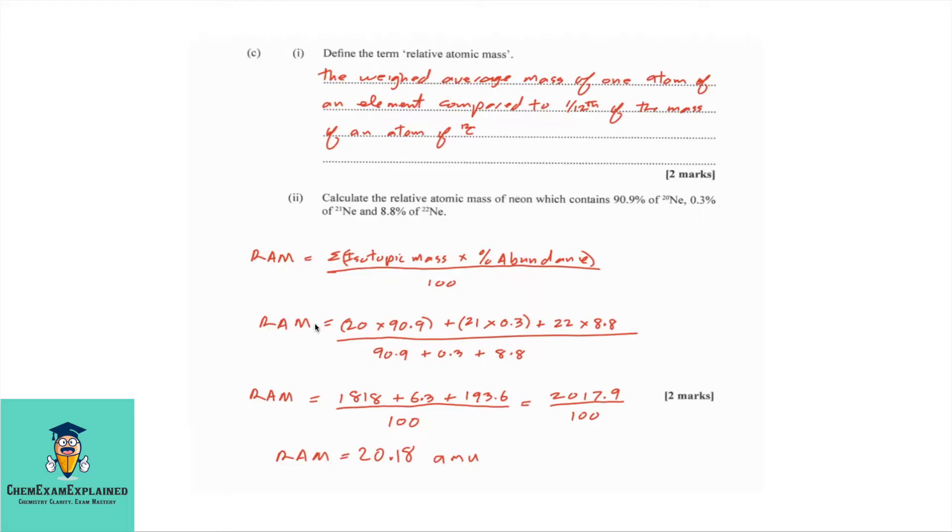The RAM is equal to 20 times 90.9, plus 21 times 0.3, plus 22 times 8.8, divided by the total of the percentage, which is 100. And your answer is 20.18 AMU, which means atomic mass unit, but you can leave it blank. Your answer could simply be 20.18.